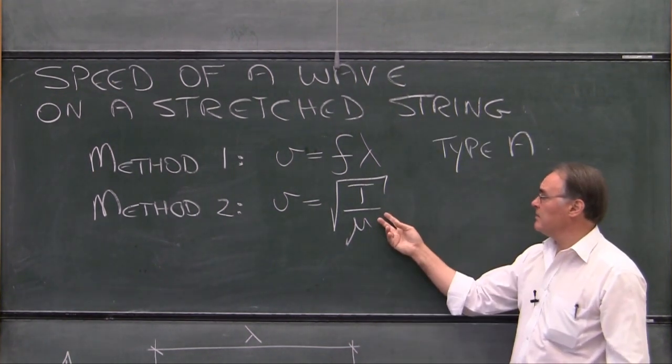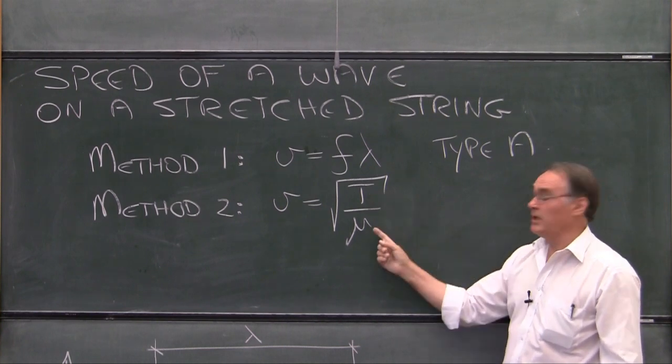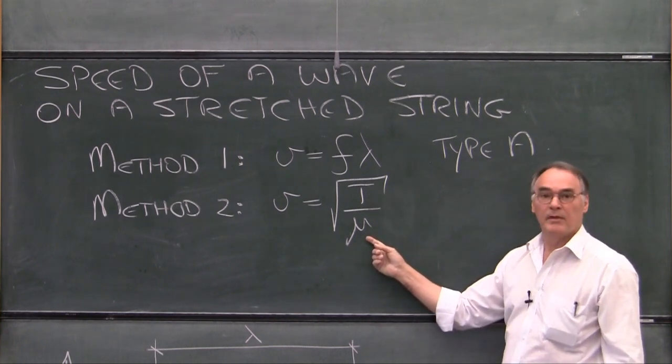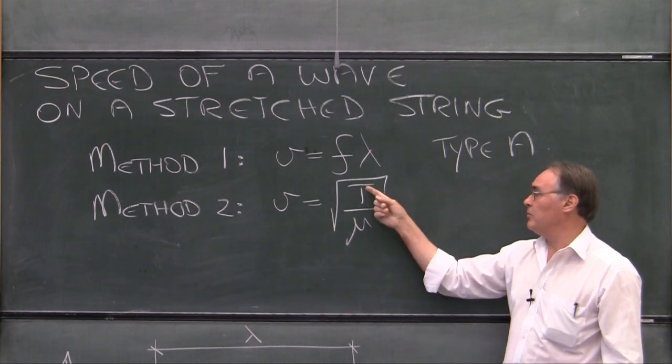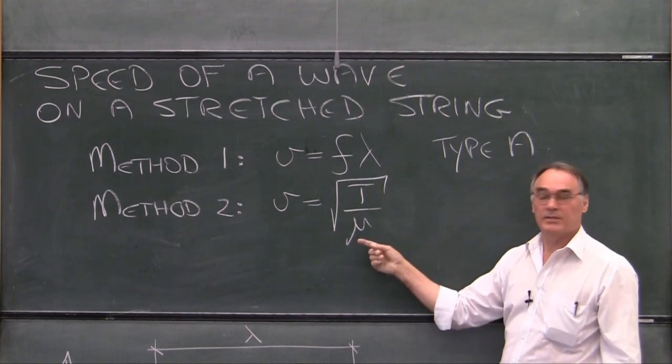Whereas in the second case, we're only going to have one reading of the tension and one reading of the mass per unit length. And because you have only one reading, you'll do a Type B analysis of the uncertainty.